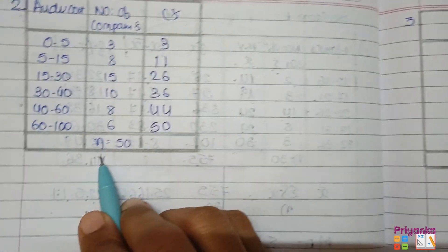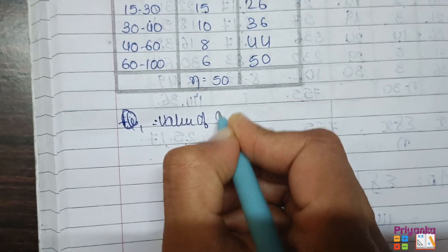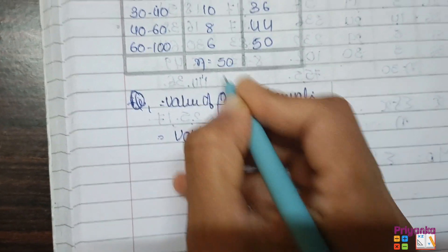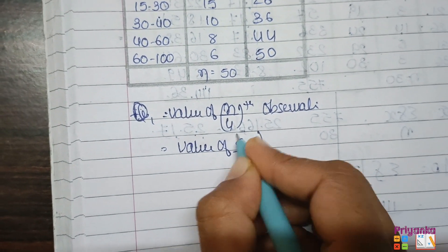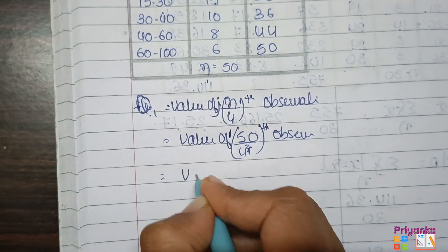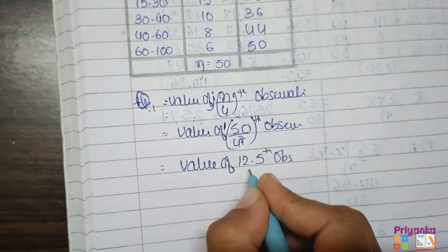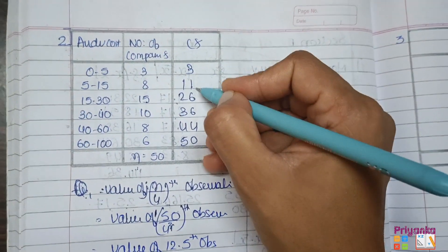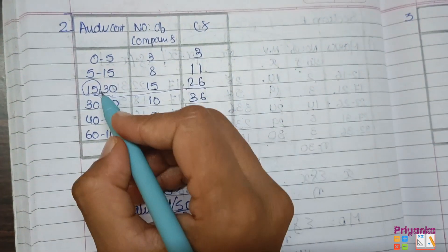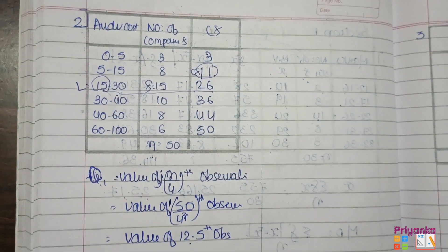Now find the first quartile Q1. The value is n upon 4, that is 50 divided by 4 equals 12.5th observation. Match this in the cumulative frequency: 11 is less than 12.5, so 26 will be selected. Go to that row and make a circle — that gives the lower limit, the frequency, and the cumulative frequency of the row above it (cf).